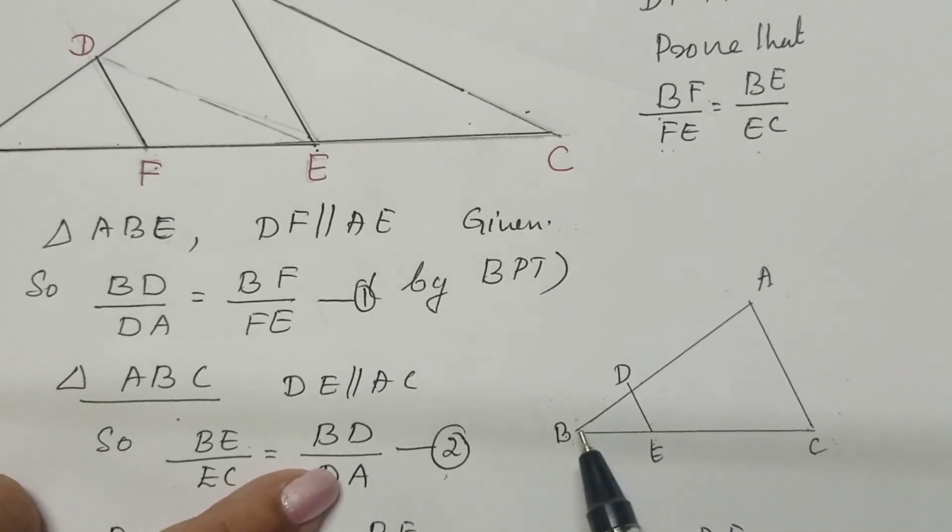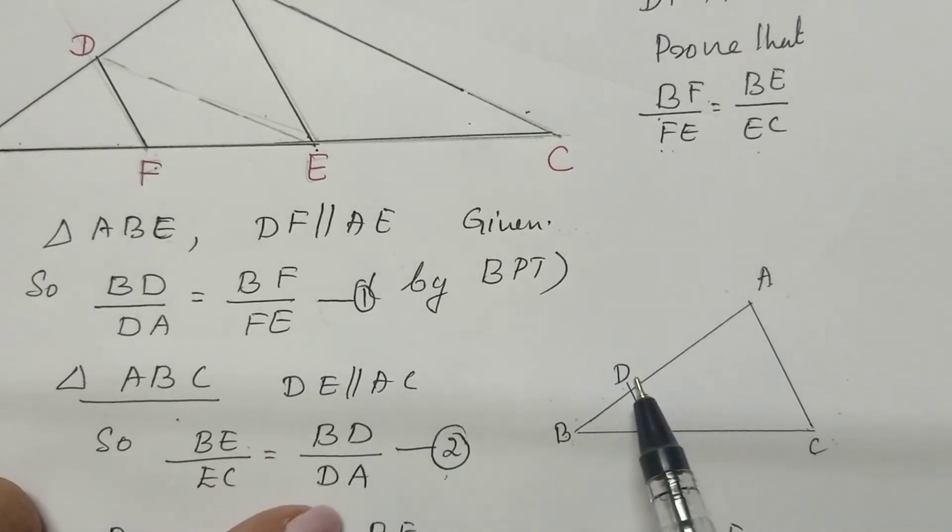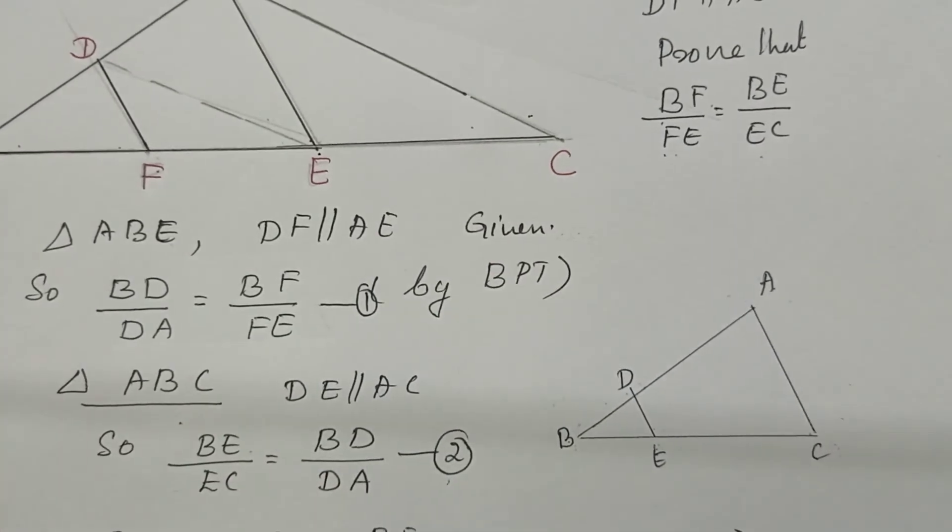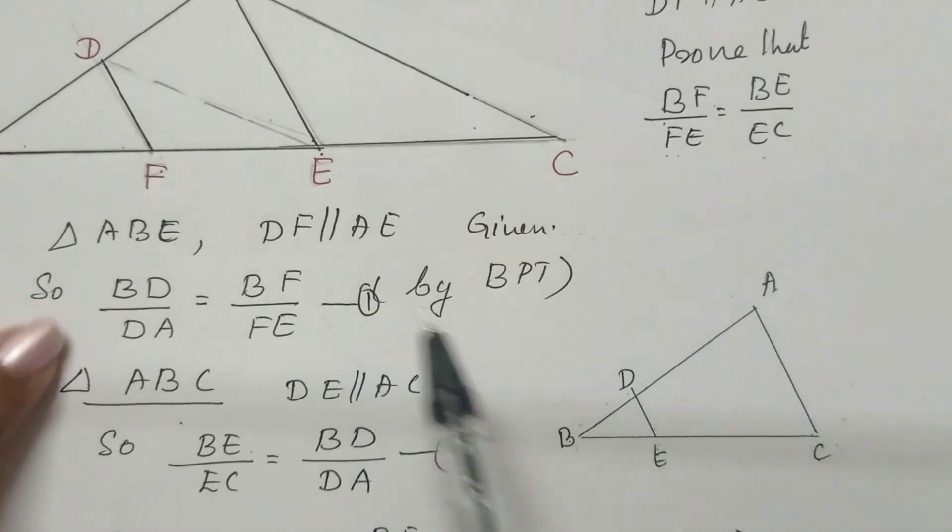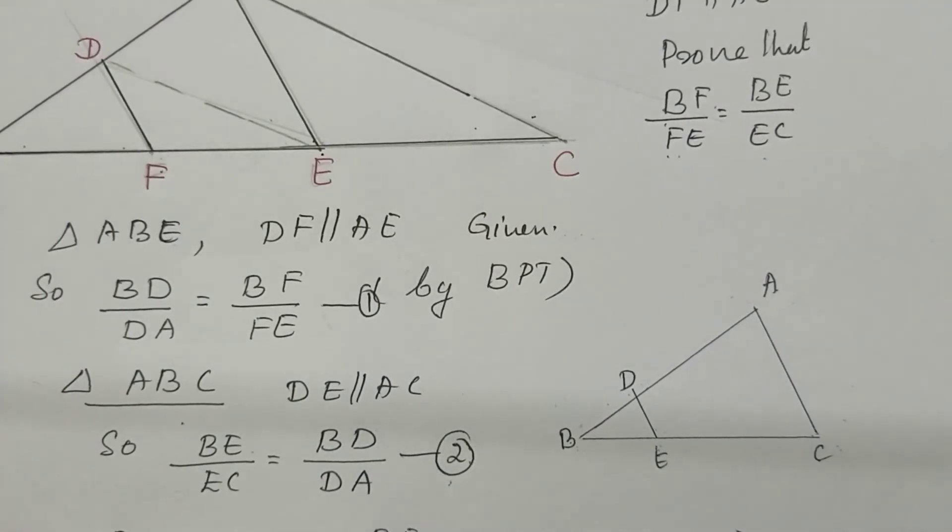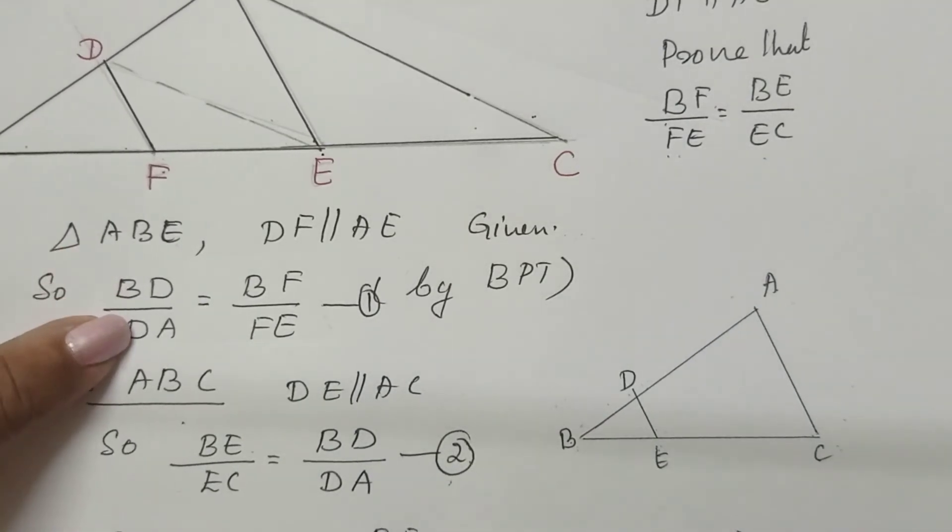Using equation 1 and equation 2, we can write BD divided by DA equal to BF divided by FE equal to BE divided by EC.